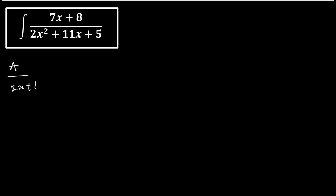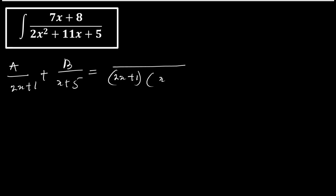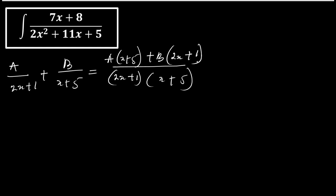Rewriting: 7x plus 8 over (2x plus 1)(x plus 5) equals A over (2x plus 1) plus B over (x plus 5). Taking the LCM, this becomes A times (x plus 5) plus B times (2x plus 1) over (2x plus 1)(x plus 5).